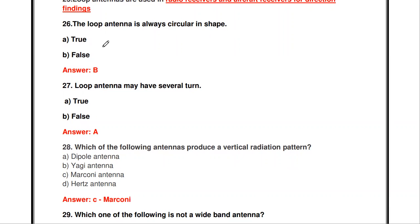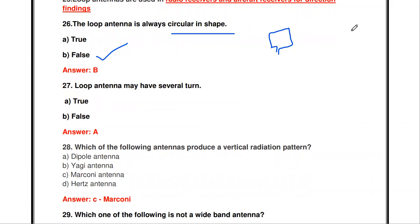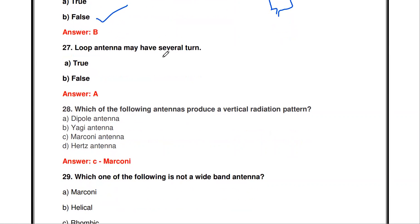The loop antenna is always circular in shape — true or false? The answer is false. Loop antennas can be square, rectangular, diamond-shaped, circular, and other shapes.